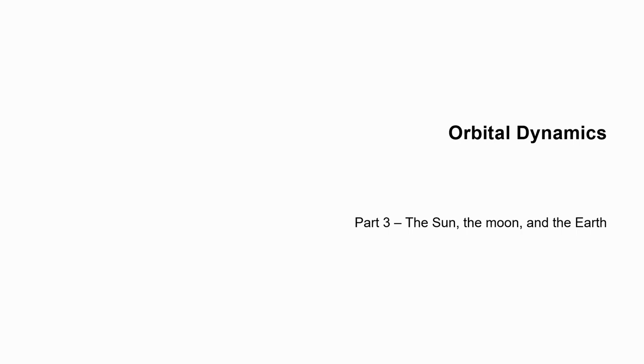Welcome to Orbital Dynamics, Part 3. In this section, we're going to talk about a spherical Earth. Things that orbit move around spherical objects, or at least mostly spherical objects. I'm going to explain how the ancients discovered that the Earth we live on is a sphere, and later how they figured out its size relative to the Moon and the Sun.